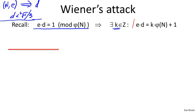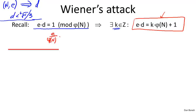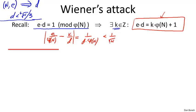Now let's stare at this key equation. We're going to divide both sides by D times φ(n), moving the K·φ(n) term to the left, giving us: E/φ(n) − K/D = 1/(D·φ(n)). Adding absolute values, which doesn't change the equality, we note that φ(n) is almost N — very, very close to N. So that right-hand fraction is less than 1 over square root of N. In fact it's much smaller than that, on the order of 1/N, but for our purposes all we need is that this fraction is less than 1 over square root of N.